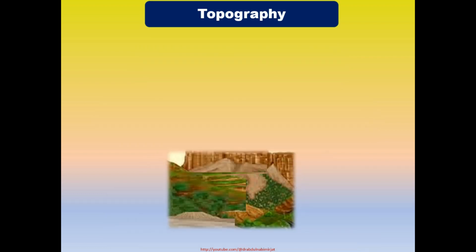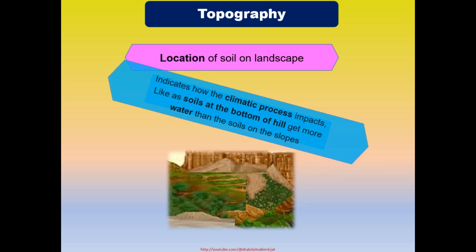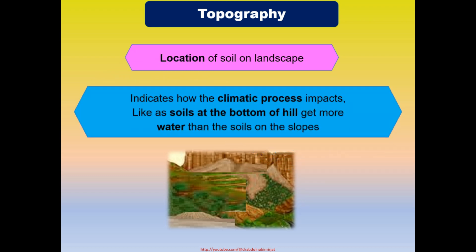Topography is a soil forming factor which indicates the location of a soil on the landscape, and shows how climatic processes impact it. For example, soils at the bottom of a hill get more water than soils on the slopes. Mineral accumulations, plant nutrients, type of vegetation, erosion, and water drainage are all dependent on topography.